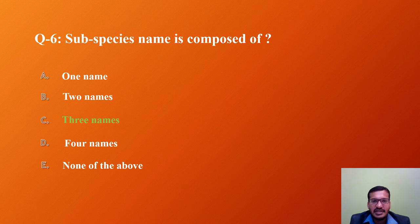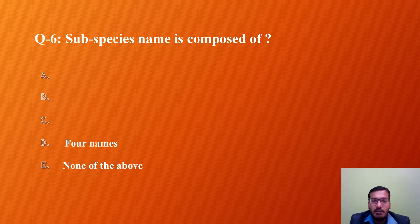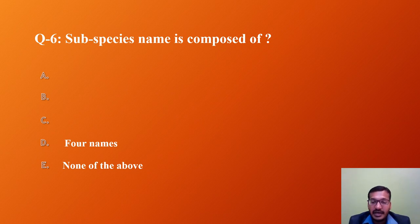Question 6: A subspecies name is composed of how many names? A) One, B) Two, C) Three, D) Four, E) None of the above. Uninominal nomenclature is used for taxa above species rank such as kingdom, phylum, class, order, family, and genus. Binominal nomenclature is used for species level. Trinominal nomenclature is used for subspecies level. So the correct answer is C — three names: generic name, specific name, and subspecific name.